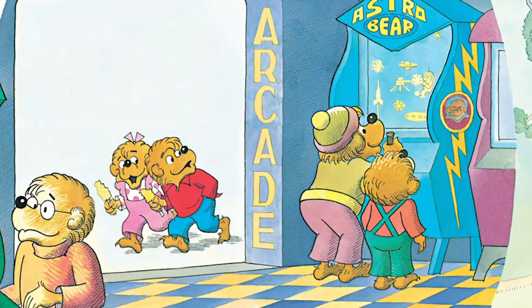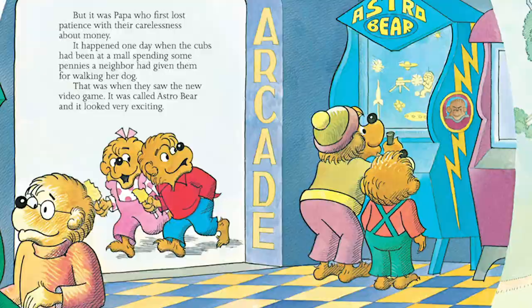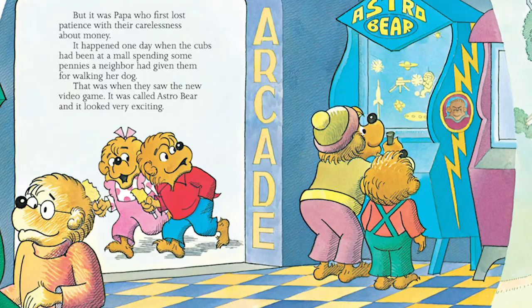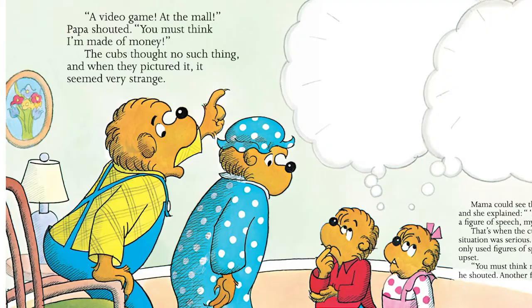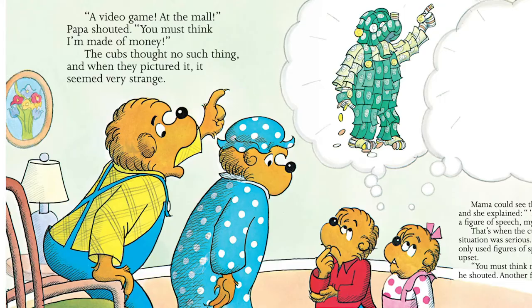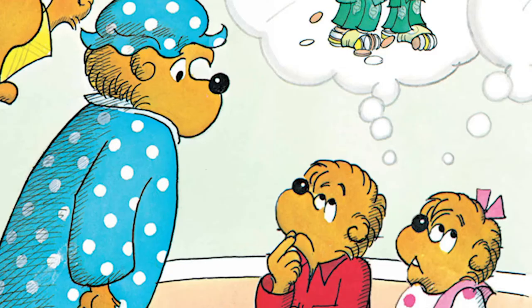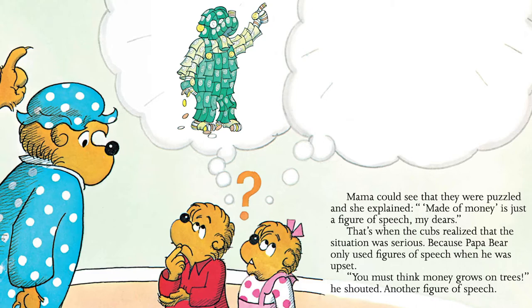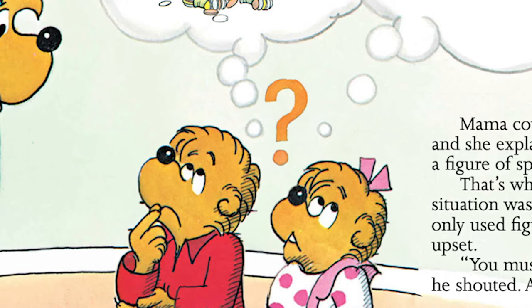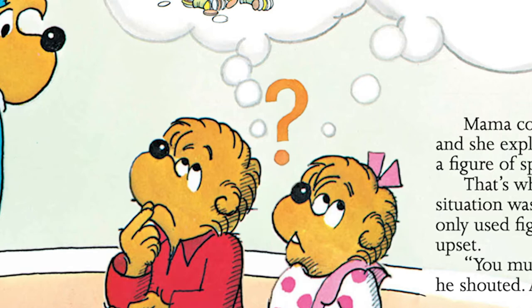But it was Papa who first lost his patience with their carelessness with money. It happened one day when the Cubs had been seen at the mall spending some pennies a neighbor had given them for walking their dog. That was when they saw the new video game. It was called Astro Bear and it looked so exciting. "A video game at the mall!" Papa shouted. "You must think that I am made of money!" The Cubs thought of no such thing, and when they pictured Papa made of money, they thought that just sounded so strange. Mama could see the puzzled look on their little faces and she said, "That's actually just a figure of speech, my dears." That's when the Cubs realized the situation was pretty serious, because Papa Bear only used figures of speech when he was very, very upset. "You must think that money grows on trees!" he shouted.